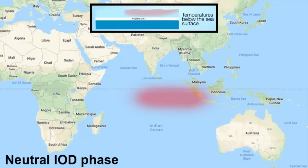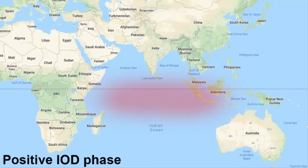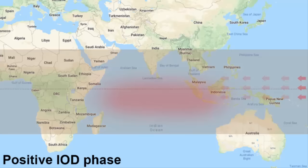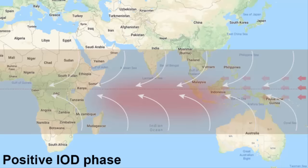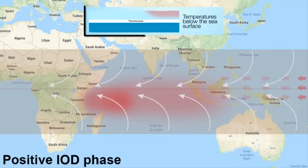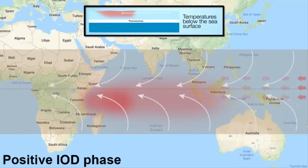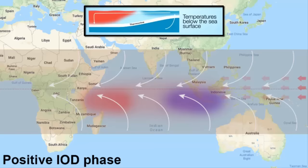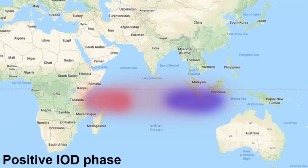Then comes the positive IOD phase. In this phase, more and more warm water of the Pacific starts to flow between the islands of Indonesia and Australia. There are strong tropical easterly winds that flow in this region, and these winds push the warm surface water towards the western side of the Indian Ocean, near Africa. You also have to pay attention to the thermocline — as the surface water is warm, the temperature below the surface is cold. When warm surface water accumulates on the western side, the deep cold water rises toward the surface on the eastern side. This process is called upwelling.